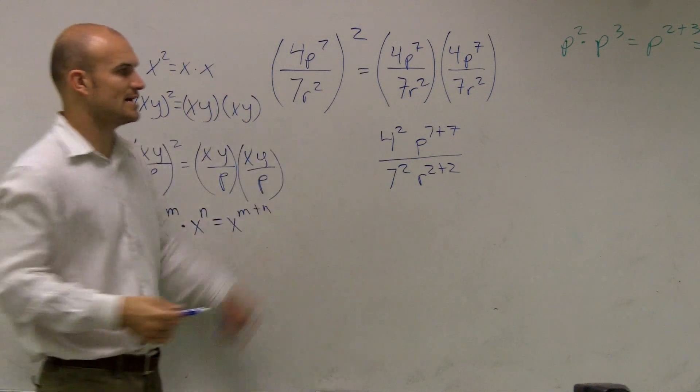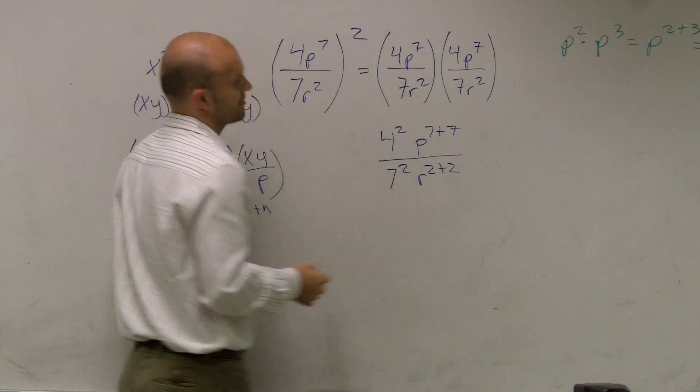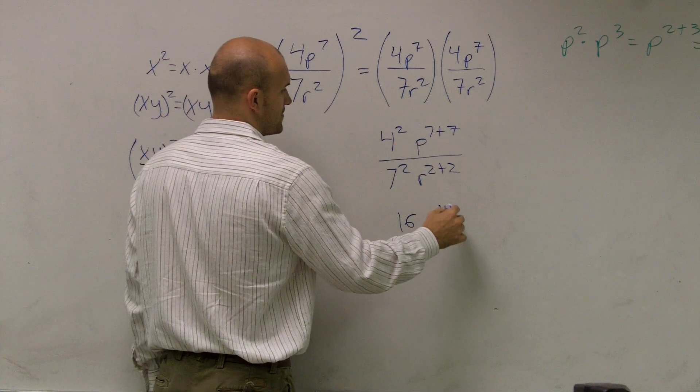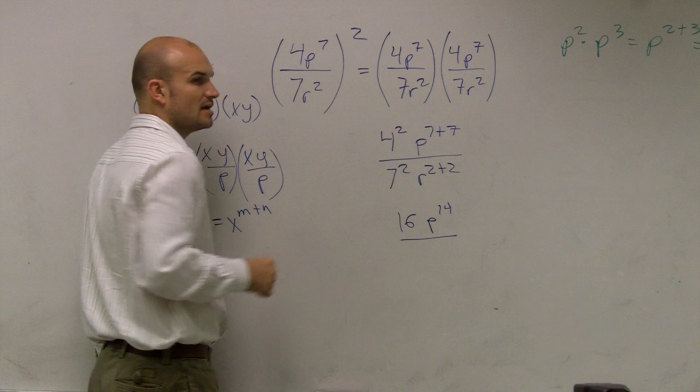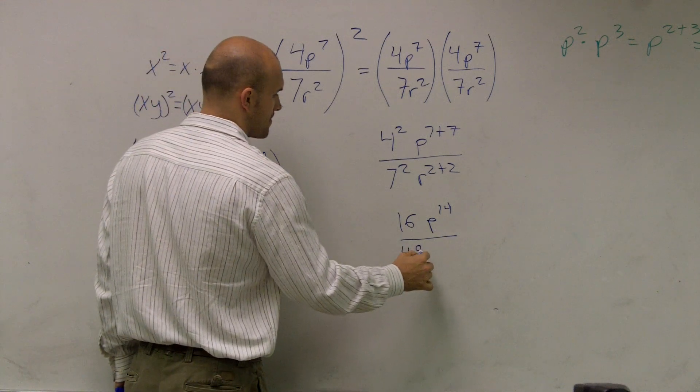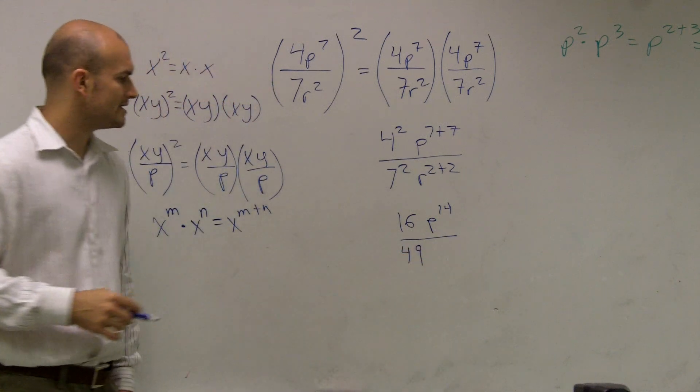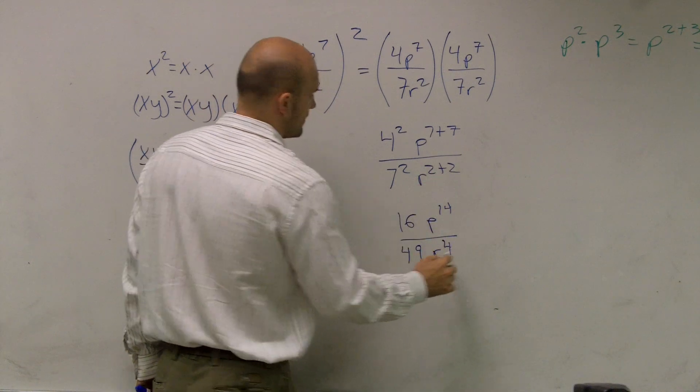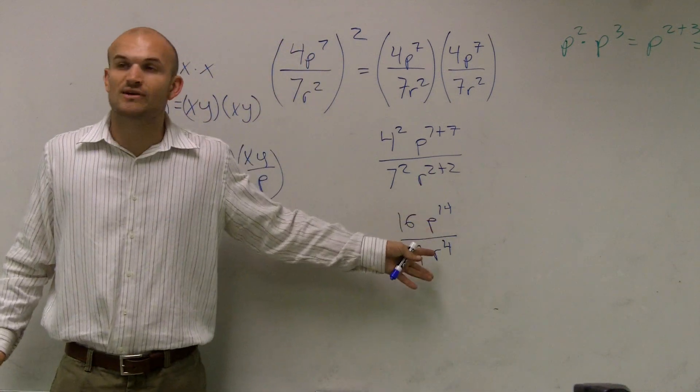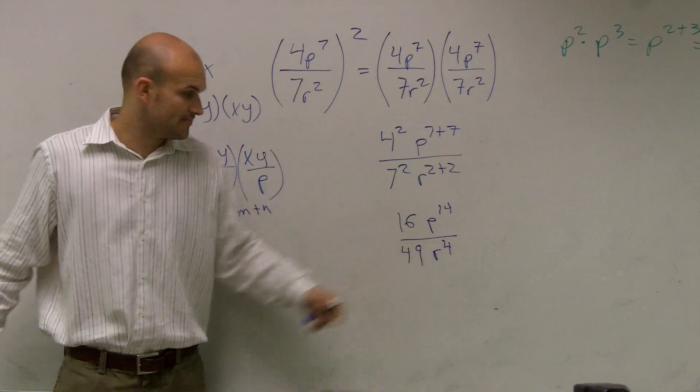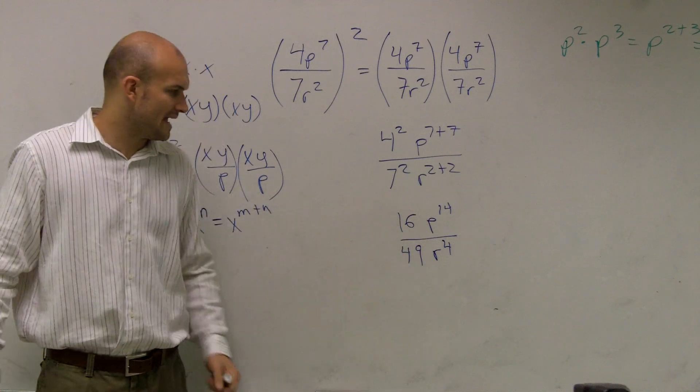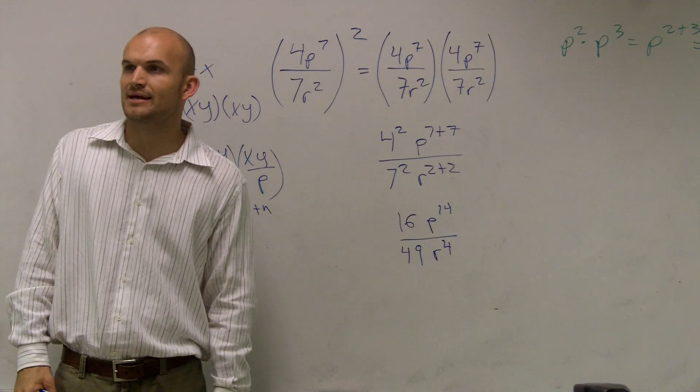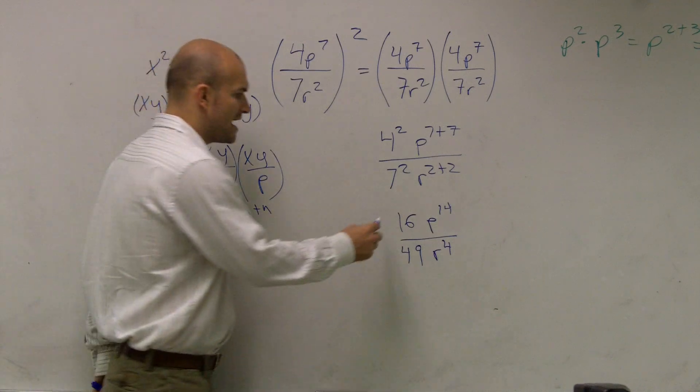So guys, 4 squared is 16, p to the 7 plus 7 is p to the 14, 7 squared is 49, and p to the 14 is just going to be r to the 4. I cannot simplify the p and the r because they don't have the same base. And 16 and 49, I don't see a number that I can think of on the top of my head that's going to reduce that fraction. So that would be your final answer.